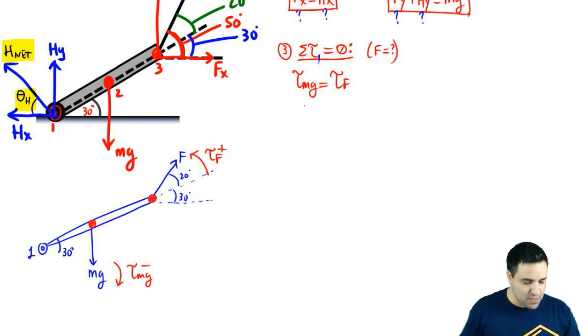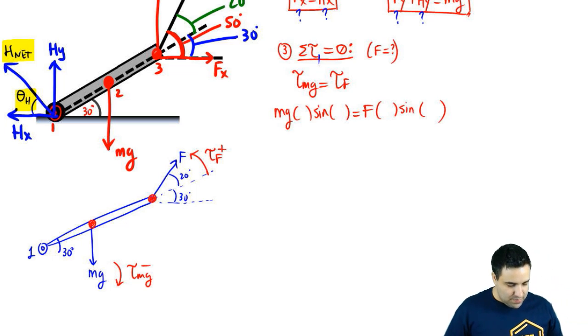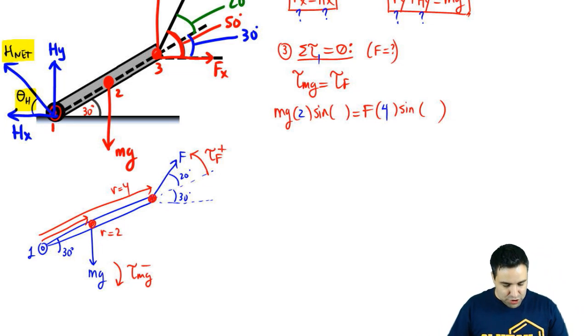And then I can expand this equation. So torque of MG is going to be MG R sine of theta. And torque of F is going to be FR sine of theta. Let's draw our R vectors. So the R vector for MG looks like this. R equals 2. And the R vector for, let me write somewhere else, R equals 2 right there. And the R vector for this guy is R equals 4. So the distance, the length of the R vector for MG is 2 because it's halfway. And F happens all the way at the end of the beam. So it's 4.